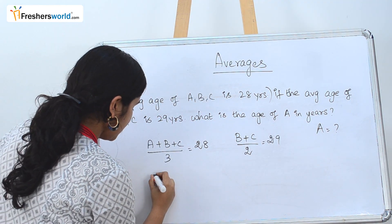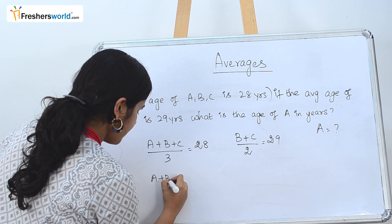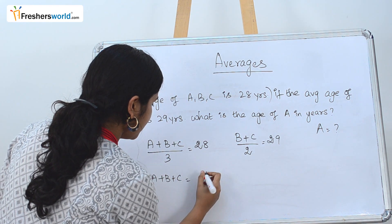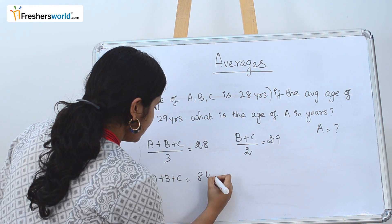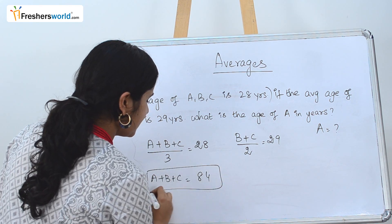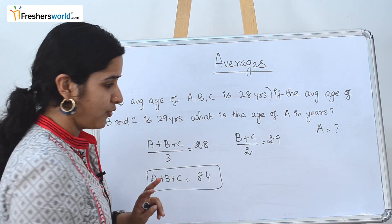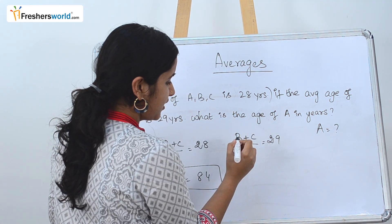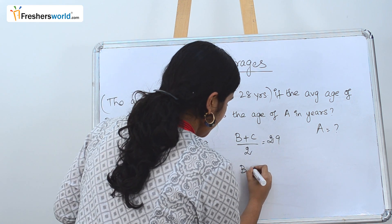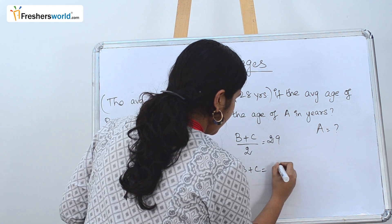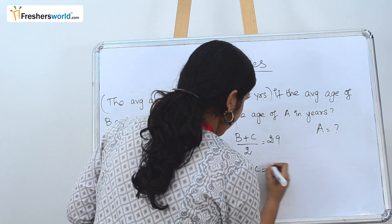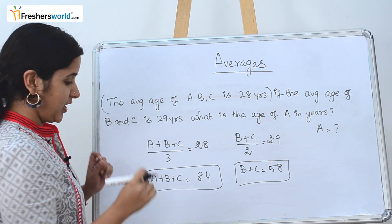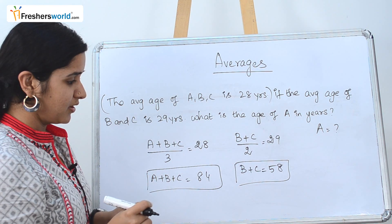A plus B plus C can be found by multiplying: 28 into 3, which gives A plus B plus C equals 84 years. For the second equation, B plus C divided by 2 equals 29, so B plus C equals 58. So now we have two equations: A plus B plus C equals 84, and B plus C equals 58.